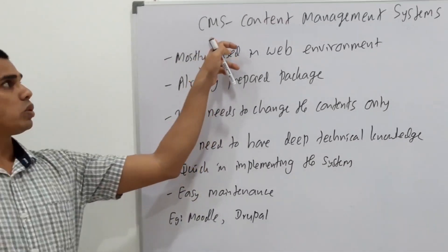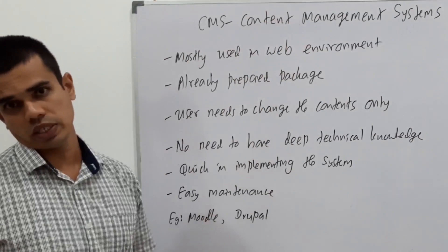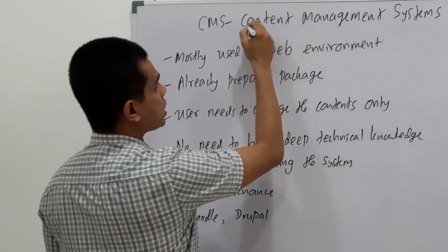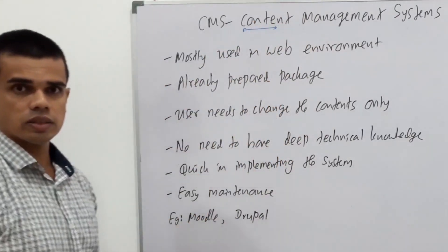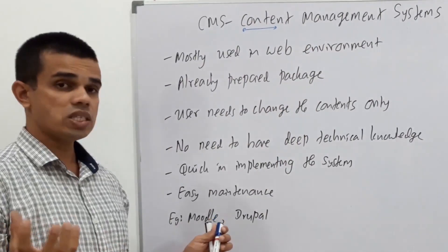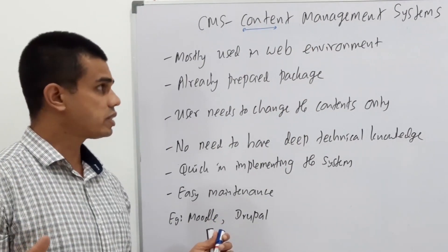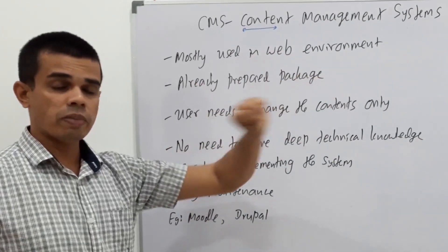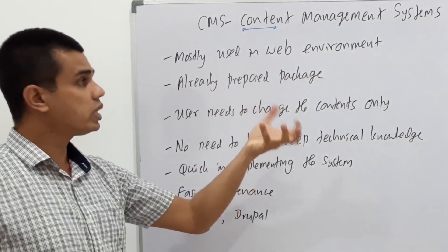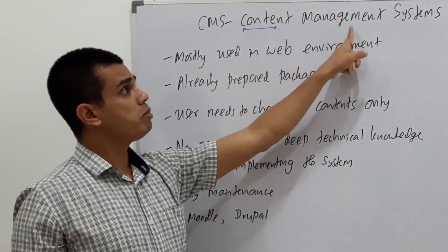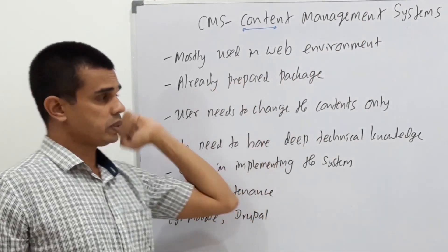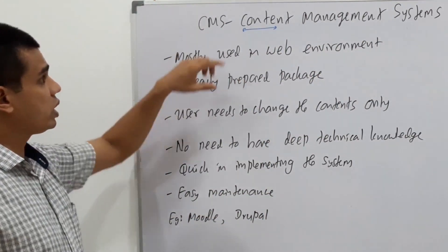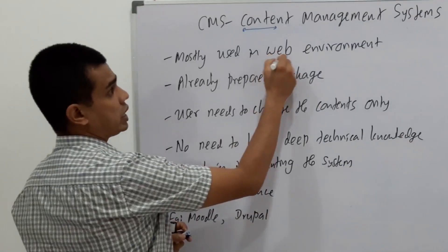Now we're going to the next system called CMS, content management system. We will try to get the idea from the topic itself - a system to manage contents. What are contents? Contents are the ones we feed, the ones we need to handle. As an example, in the bank environment, the contents are the bank balance, the money deposited. These CMS systems are mostly found in web-based environment, in the internet based on web.